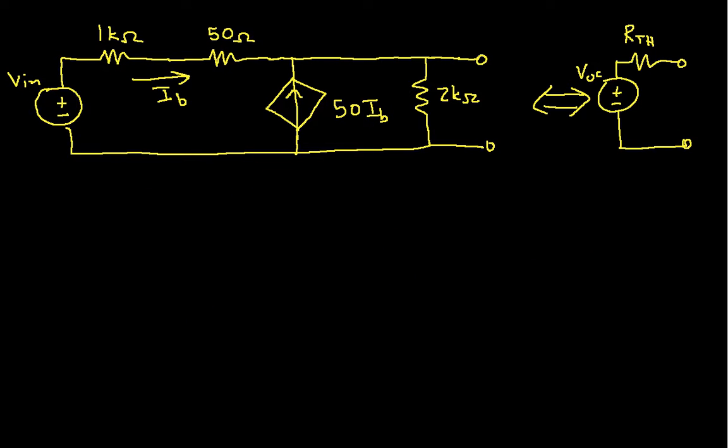So our goal then is to find the open circuit voltage and RTH for the circuit on the left. So without further ado, let's begin by finding the open circuit voltage. We've marked the open circuit voltage, and now we need to figure out how to do the analysis for the circuit.